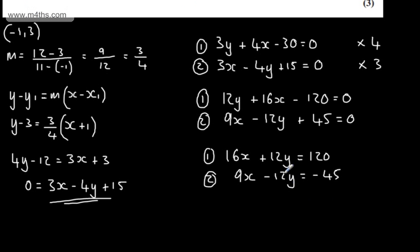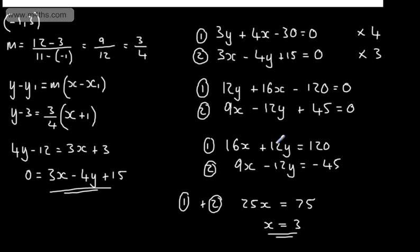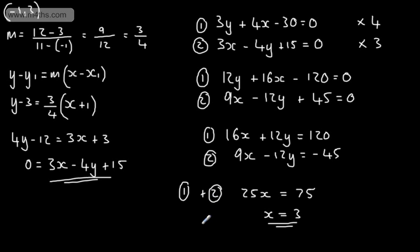We can see now the coefficient of the term in Y is the same. We've got a different sign so we're going to add these two to eliminate Y. So if I add now 1 plus 2 I'm going to have 25X. Those two will cancel and this is going to leave me 75. So we can divide both sides by 25 to get X is equal to 3. I can substitute this back into either equation. I'm just going to put it through equation 1